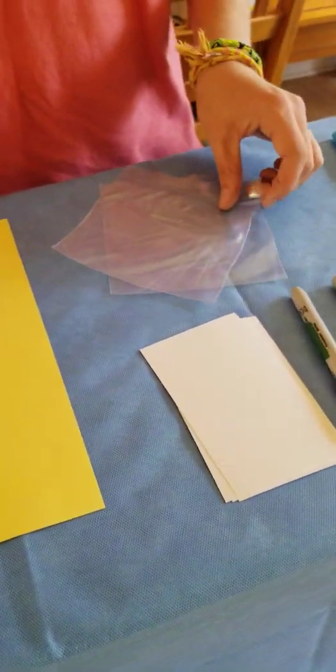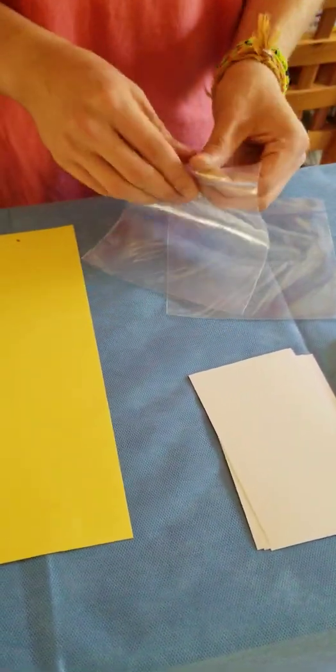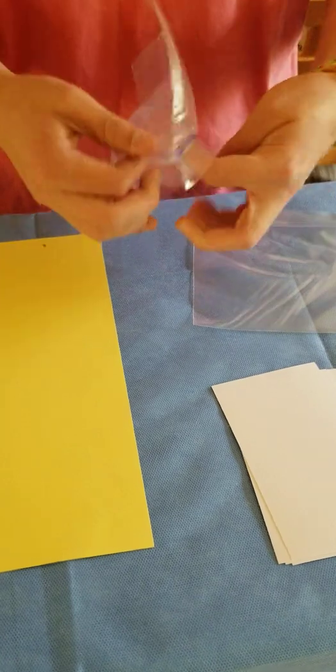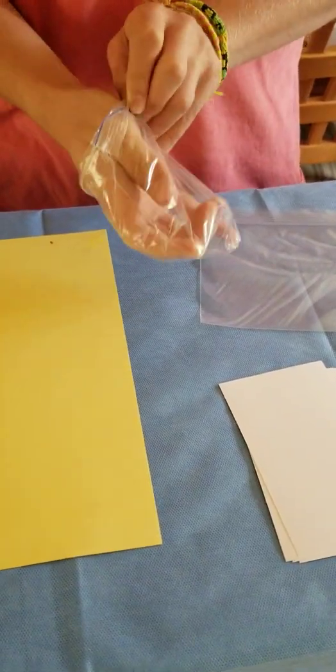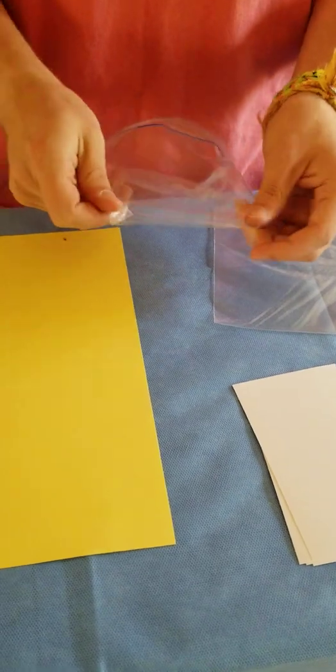What you're going to do first is make your colored filter. Now a filter is a piece of transparent material like this plastic bag that has been colored so that some colors get absorbed while others are reflected.